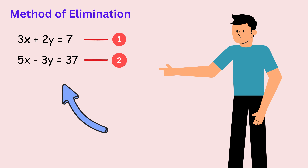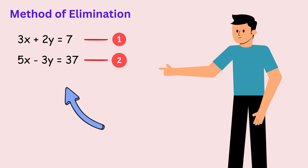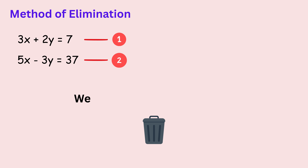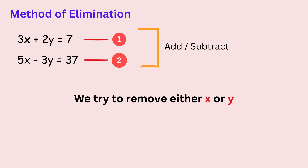Today we will see how to solve a simultaneous equation problem using the method of elimination. The basic idea behind this method is very simple. We try to remove one variable completely by combining the two equations. When we add or subtract the equations correctly, one variable disappears and the problem becomes much easier to solve.